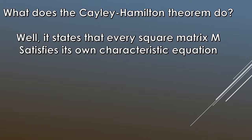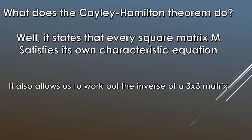The theorem states that every square matrix M satisfies its own characteristic equation. If you're unsure what a characteristic equation is, check out our previous videos — it's the determinant of A minus lambda I. Another useful property is that the theorem allows us to find the inverse of a 3x3 matrix, though it works for 2x2 as well. Typically in FP2 exams you'll be asked to do it for a 3x3.